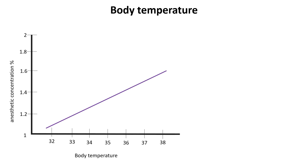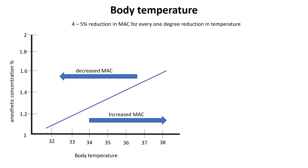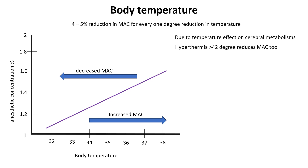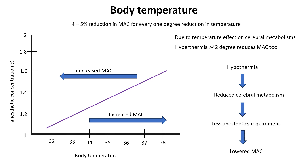Body temperature significantly influences the minimum alveolar concentration of inhaled anesthetics. Research indicates that for every 1 degree Celsius decrease in body temperature, MAC decreases by approximately 4% to 5% between 32 to 37 degrees Celsius. This reduction is due to hypothermia's effect on reducing cerebral metabolism, thereby lowering the anesthetic requirement. Conversely, hyperthermia increases MAC, necessitating higher concentrations of anesthetic agents to achieve the desired effect. Notably, nitrous oxide is an exception, as its MAC remains unchanged with variations in body temperature.